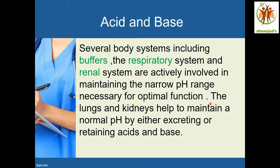In the case of alkalosis, the bicarbonate level in the blood is high. The kidney will excrete the base and retain the acid, because we need more acid to neutralize this alkalosis. The kidney will retain the acid and excrete the bicarbonate. In the lungs, it will hypoventilate the patient, so carbon dioxide retention in the blood will be high. This carbon dioxide will produce carbonic acid, which will go and neutralize the alkalosis.